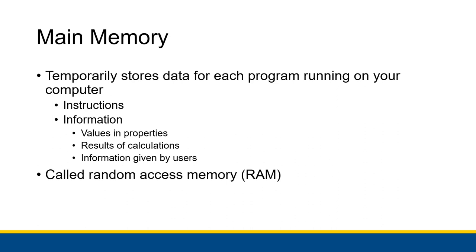Data for calculations and instructions for actually running the programs are all stored in main memory. When you turn off your computer, all of that gets deleted. So typically, if you want to actually save anything long term, you have to save it to what's known as secondary storage. Main memory is the space where programs live and where programs can store any data that they want to hold onto. In modern times, this main memory is called random access memory, or RAM.